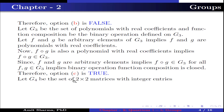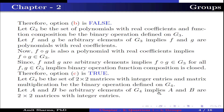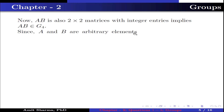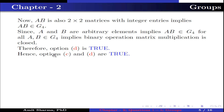Let G4 be the set of 2×2 matrices with integer entries and matrix multiplication be the binary operation defined on G4. Let A and B be arbitrary elements of G4, meaning A and B are 2×2 matrices with integer entries. Now AB is also a 2×2 matrix with integer entries, which implies AB belongs to G4 for all A, B belonging to G4. This implies binary operation matrix multiplication is closed. Therefore option D is true. Hence options C and D are true.